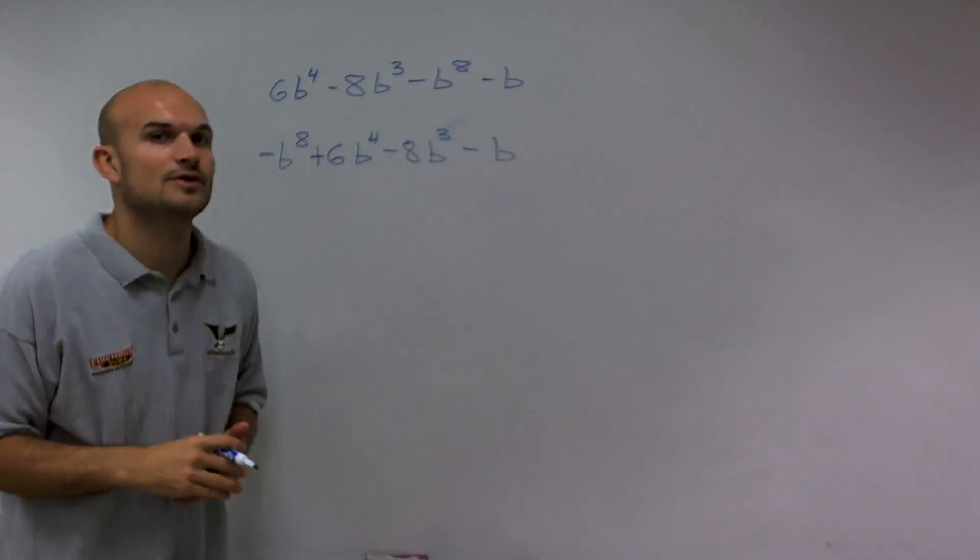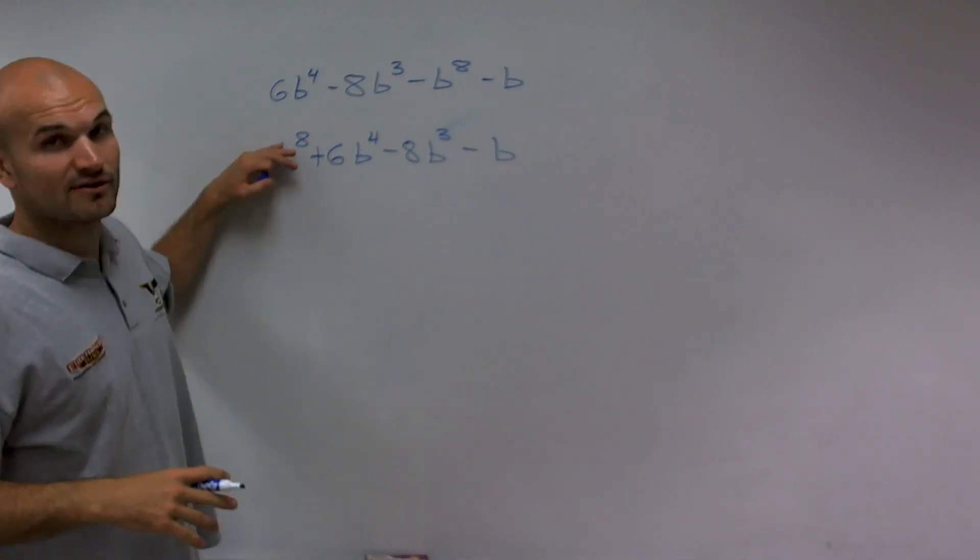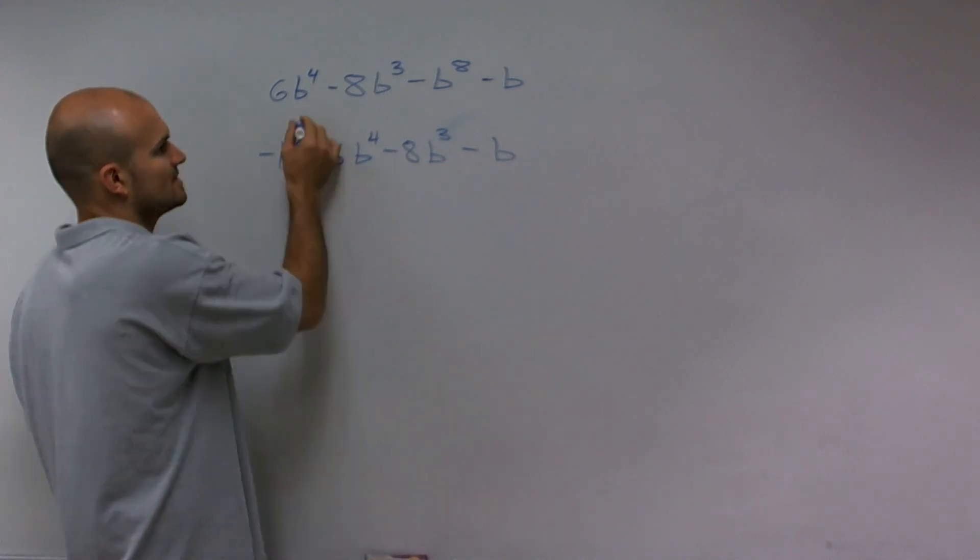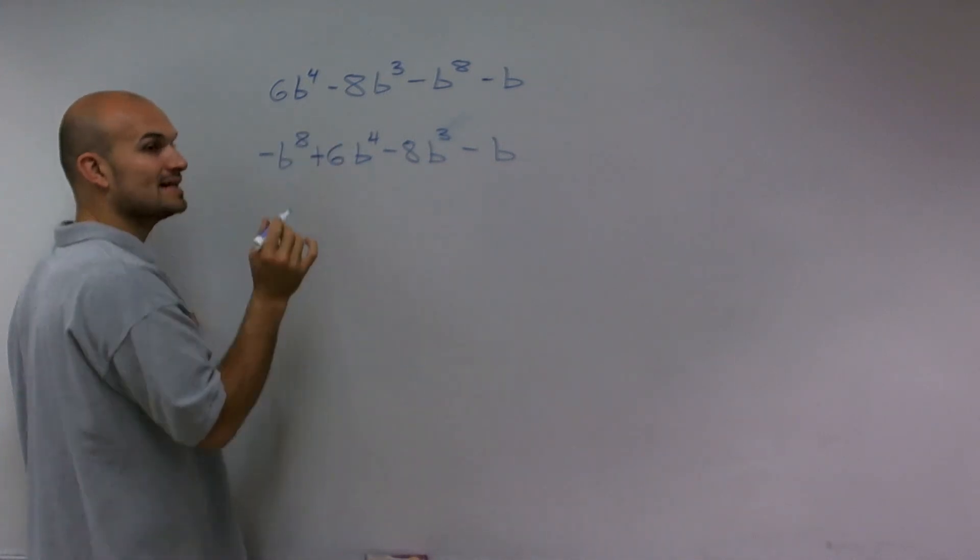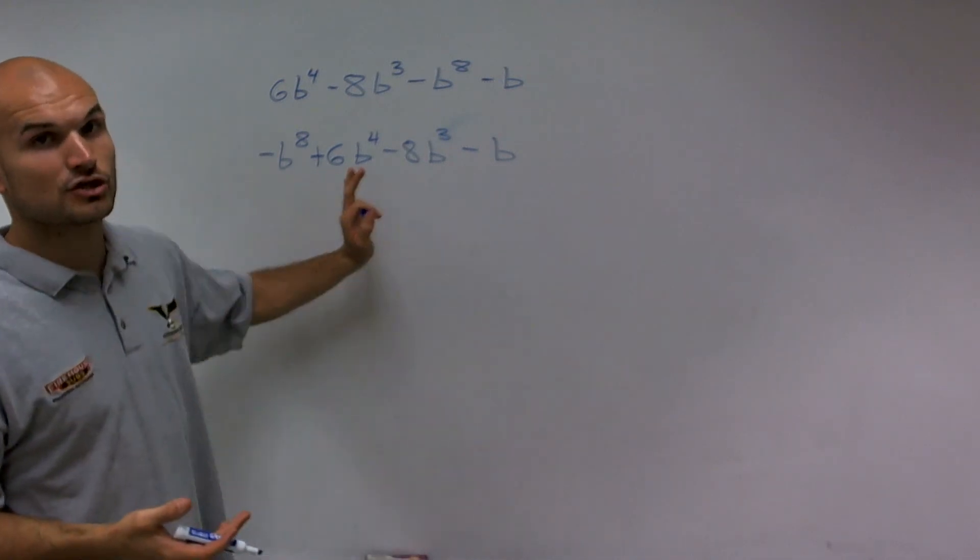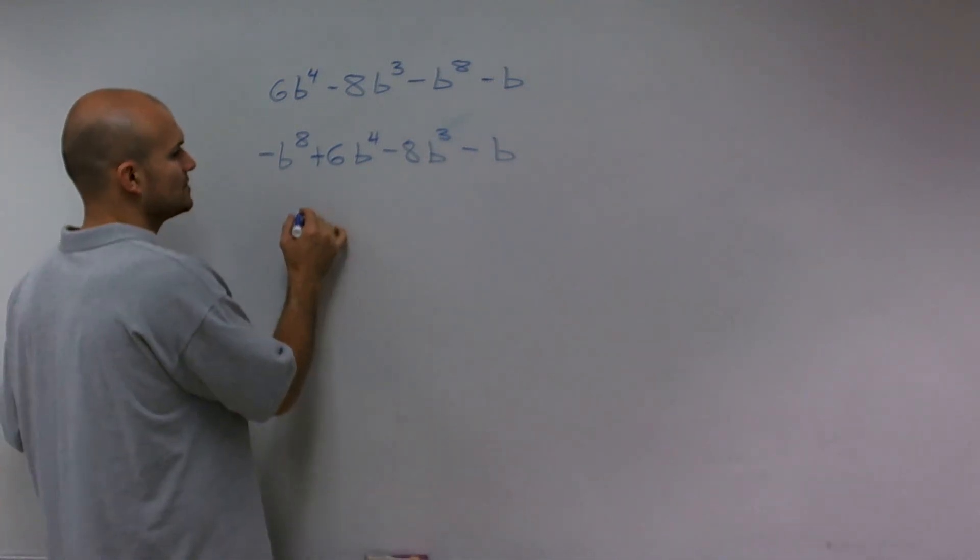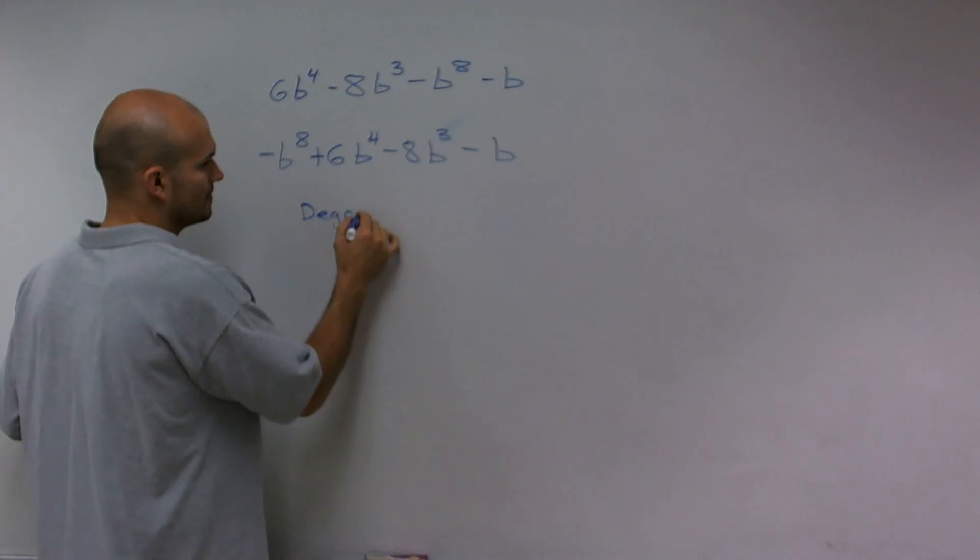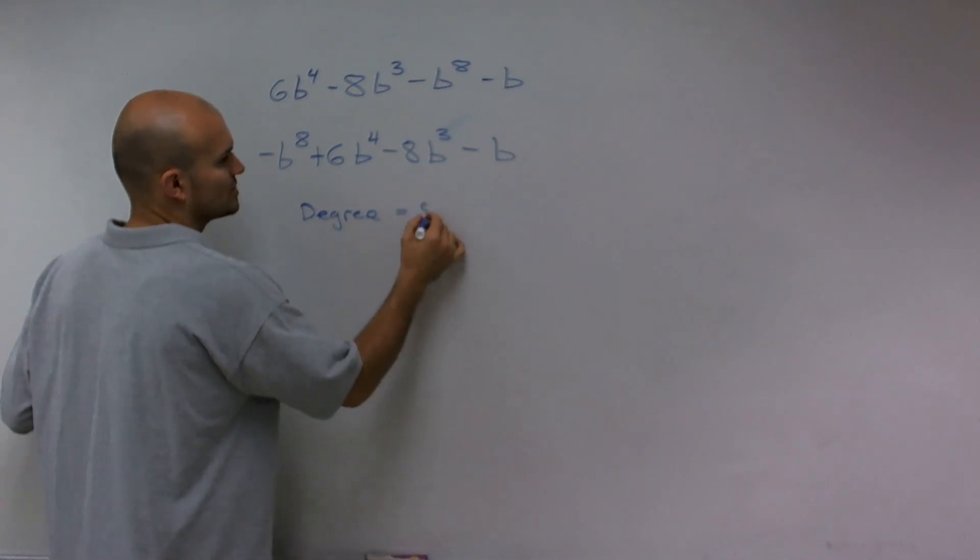Now that it's in descending order, with the largest exponent first going all the way down, I can look at that largest exponent and say, what is that number? That's going to be 8, which is going to be my degree. So I'm going to have a degree which is equal to 8.